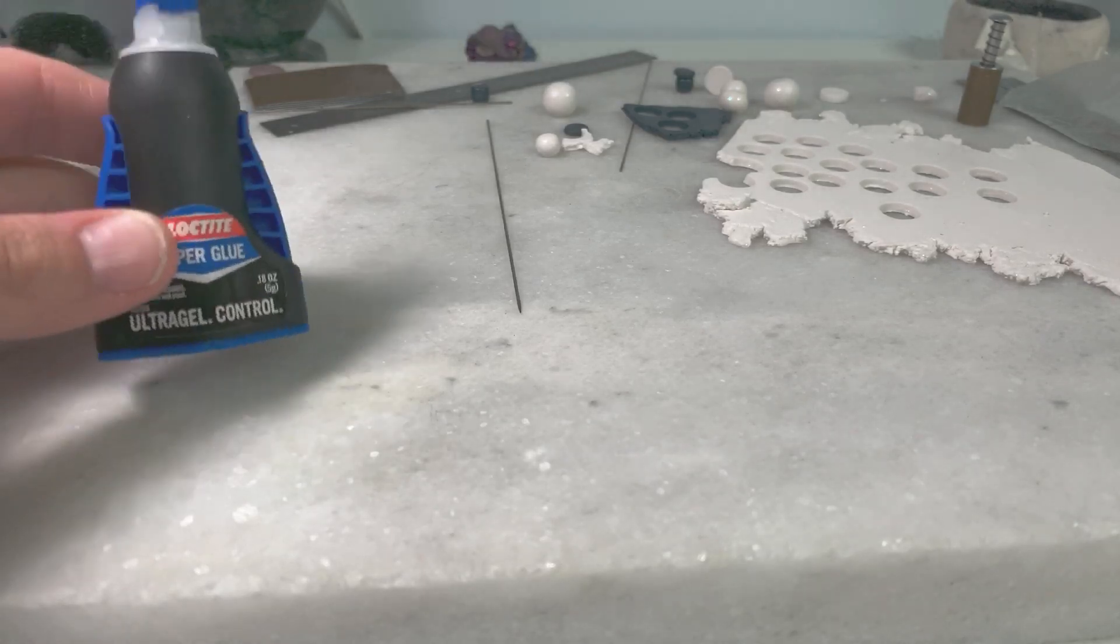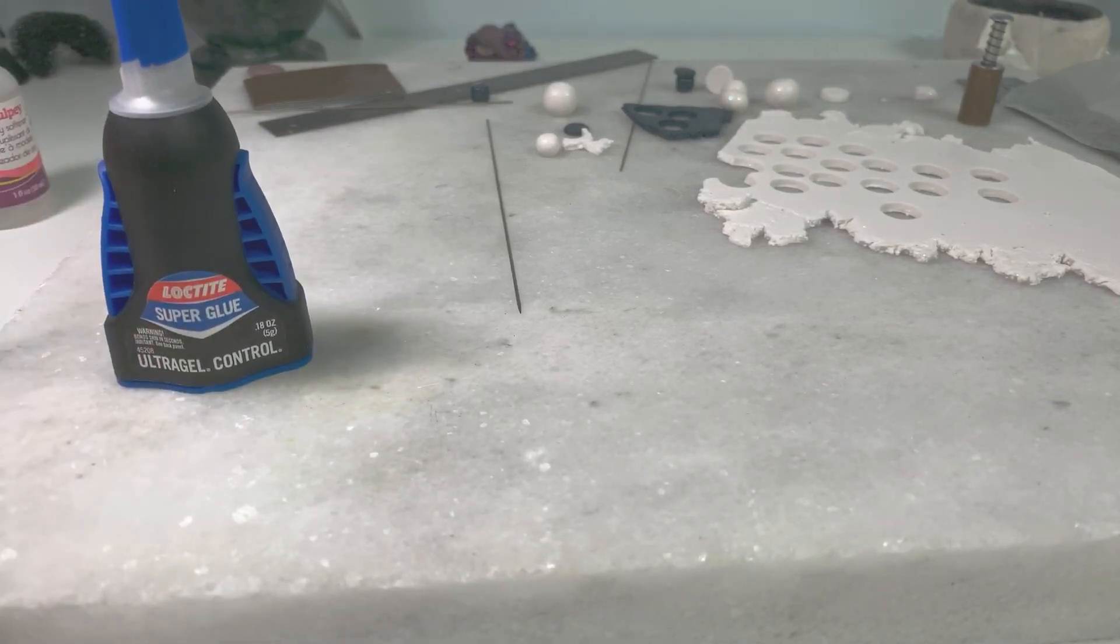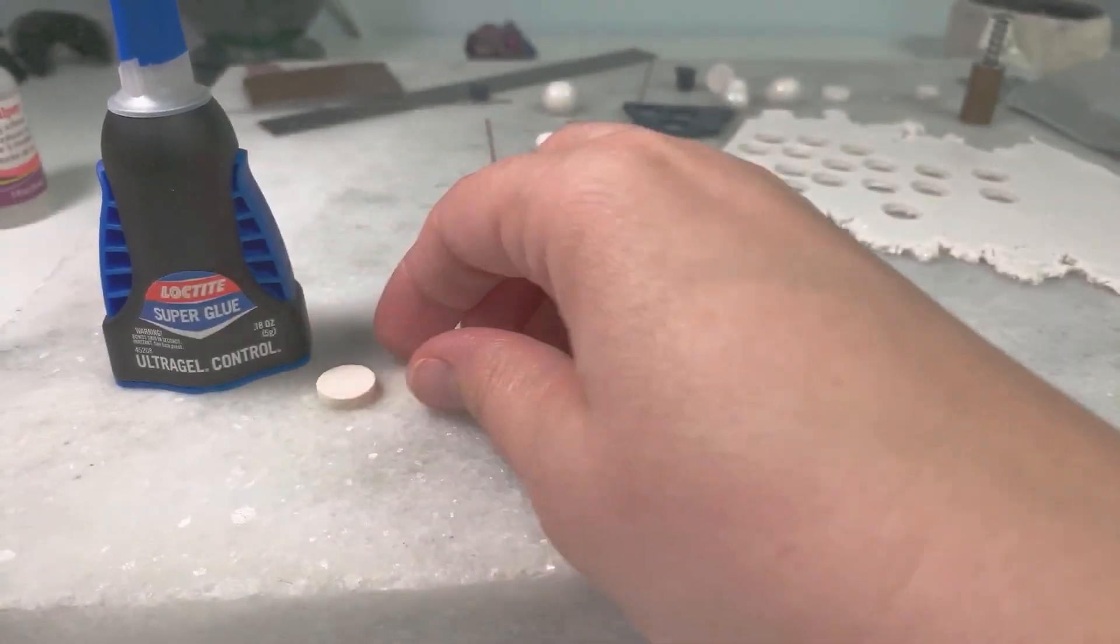This is my method for attaching the backs to earrings. I use Loctite Super Glue Ultra Control Gel. It's my favorite. It doesn't move around much.